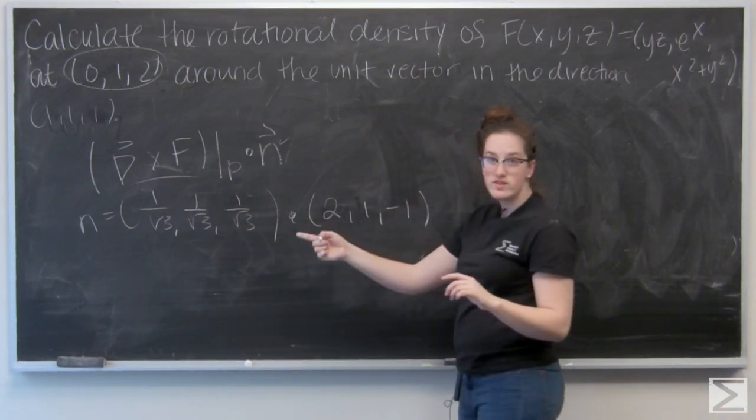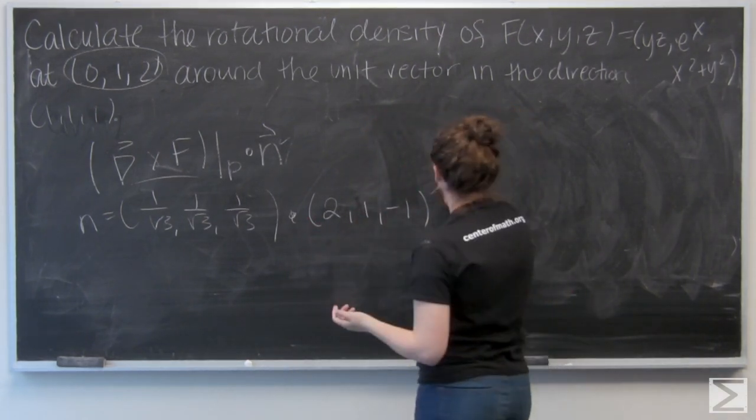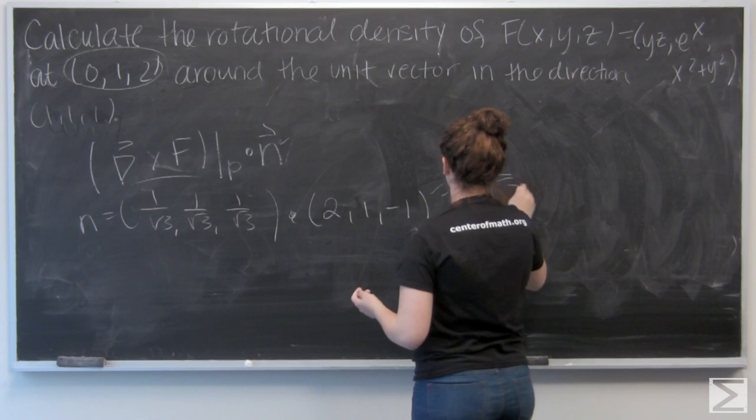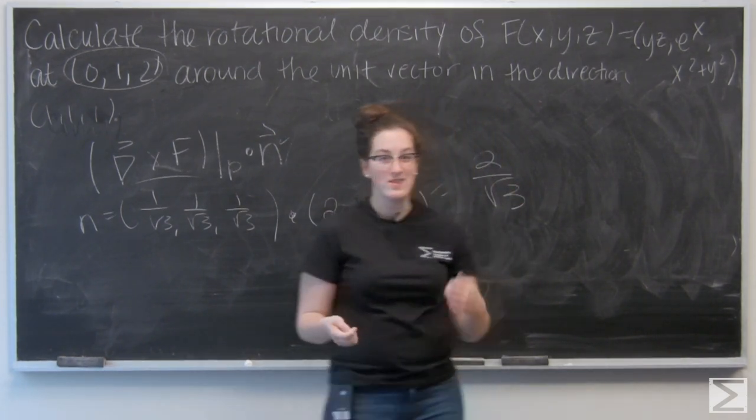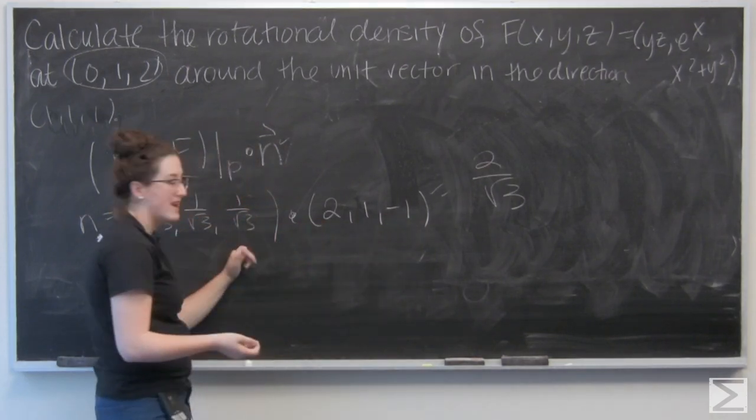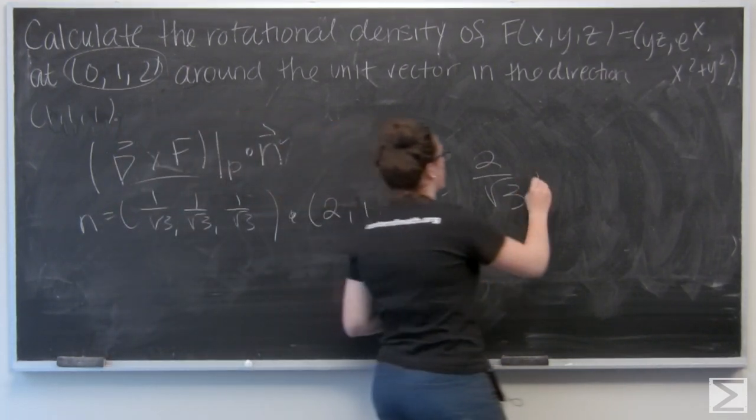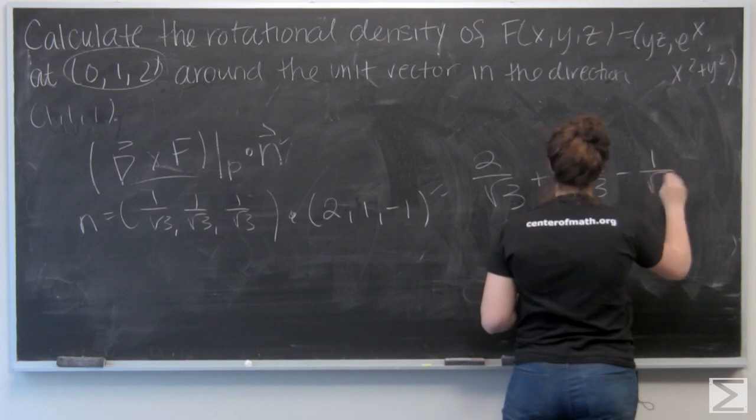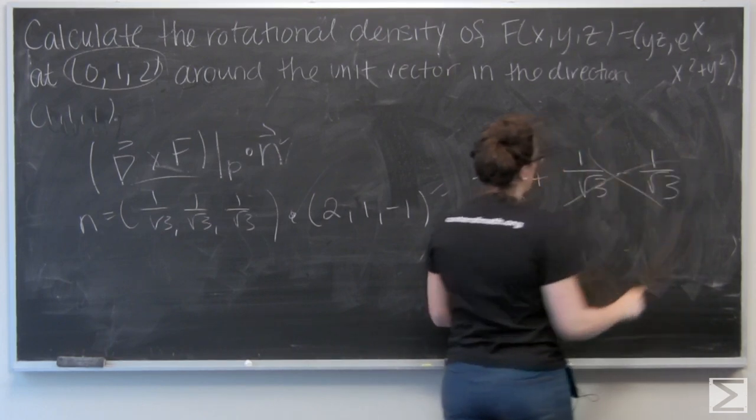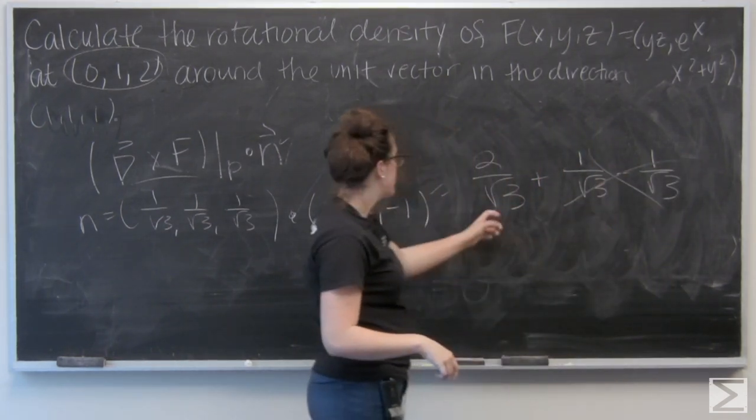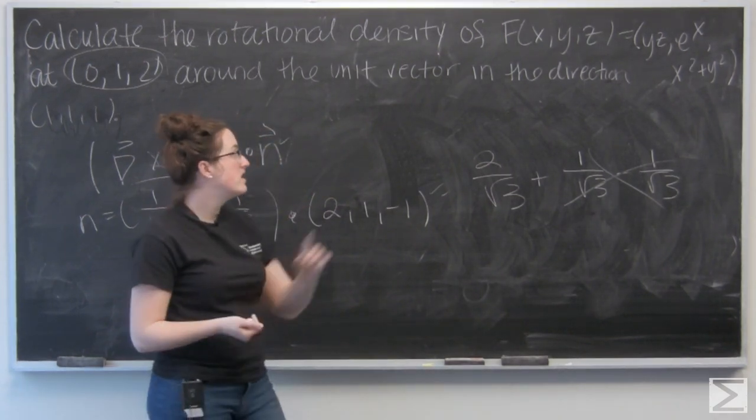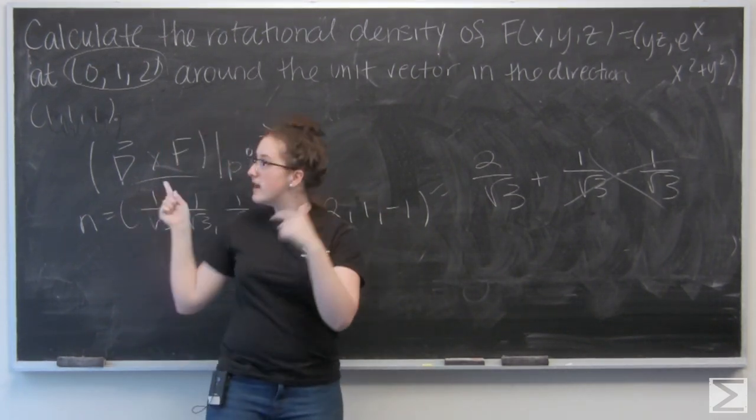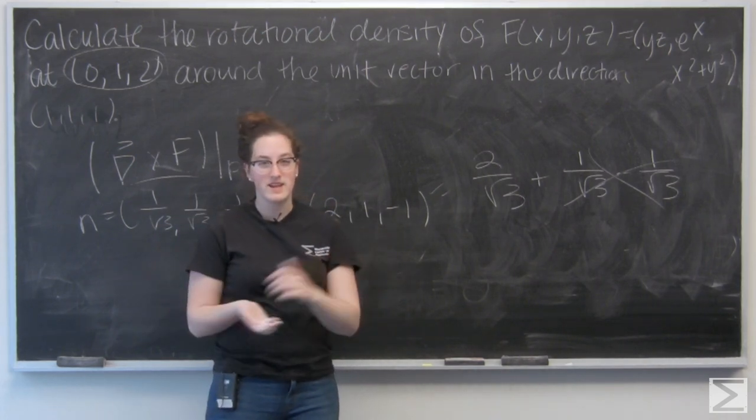So when I multiply the i component of these vectors, I get 2 over root 3, and then the j components, I get 1 over root 3, and then the k components, negative 1 over root 3. And then these two terms cancel each other out, and I'm left with 2 over the square root of 3 as the rotational density of f at this point in that given normal direction. Thank you.